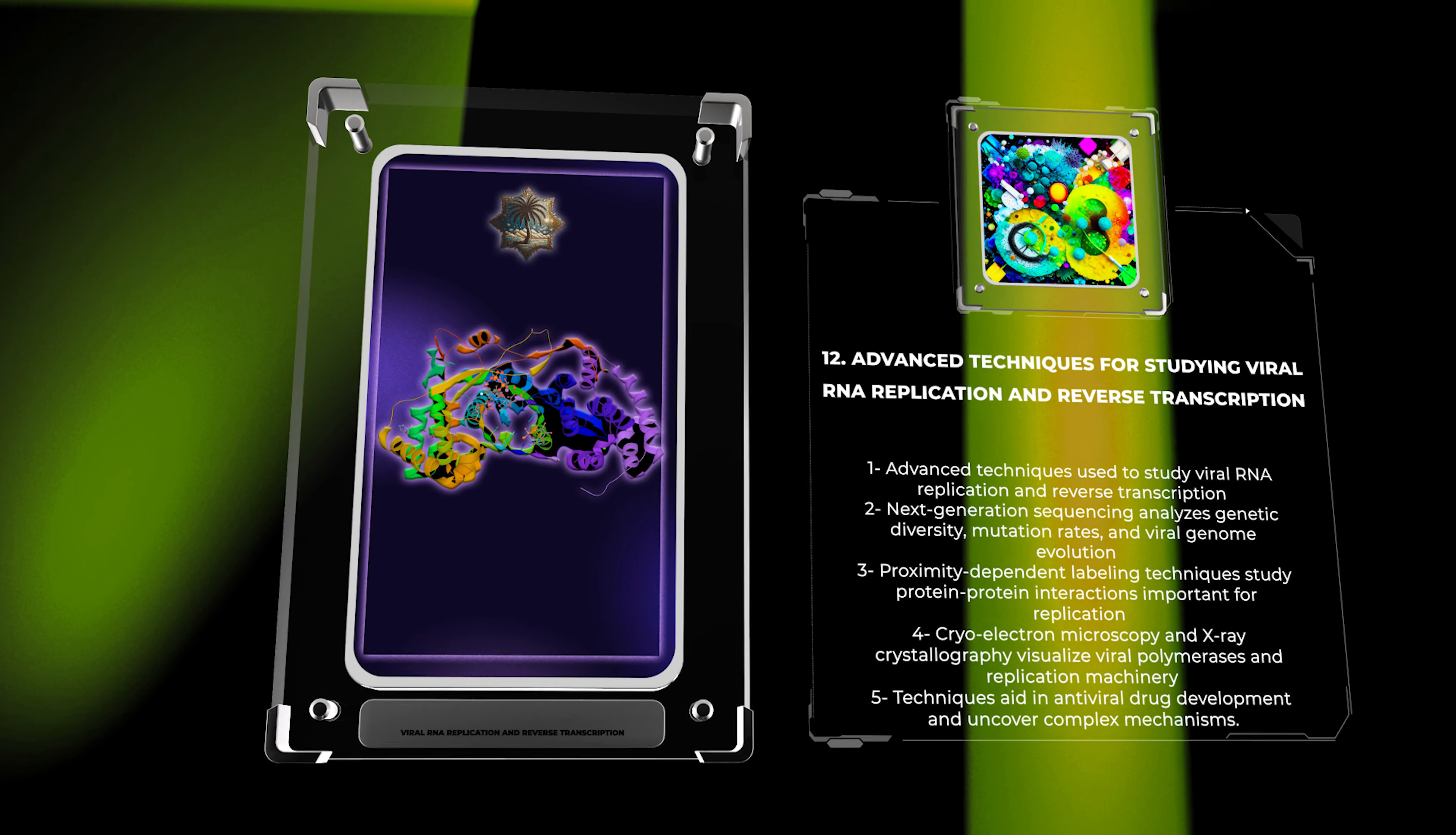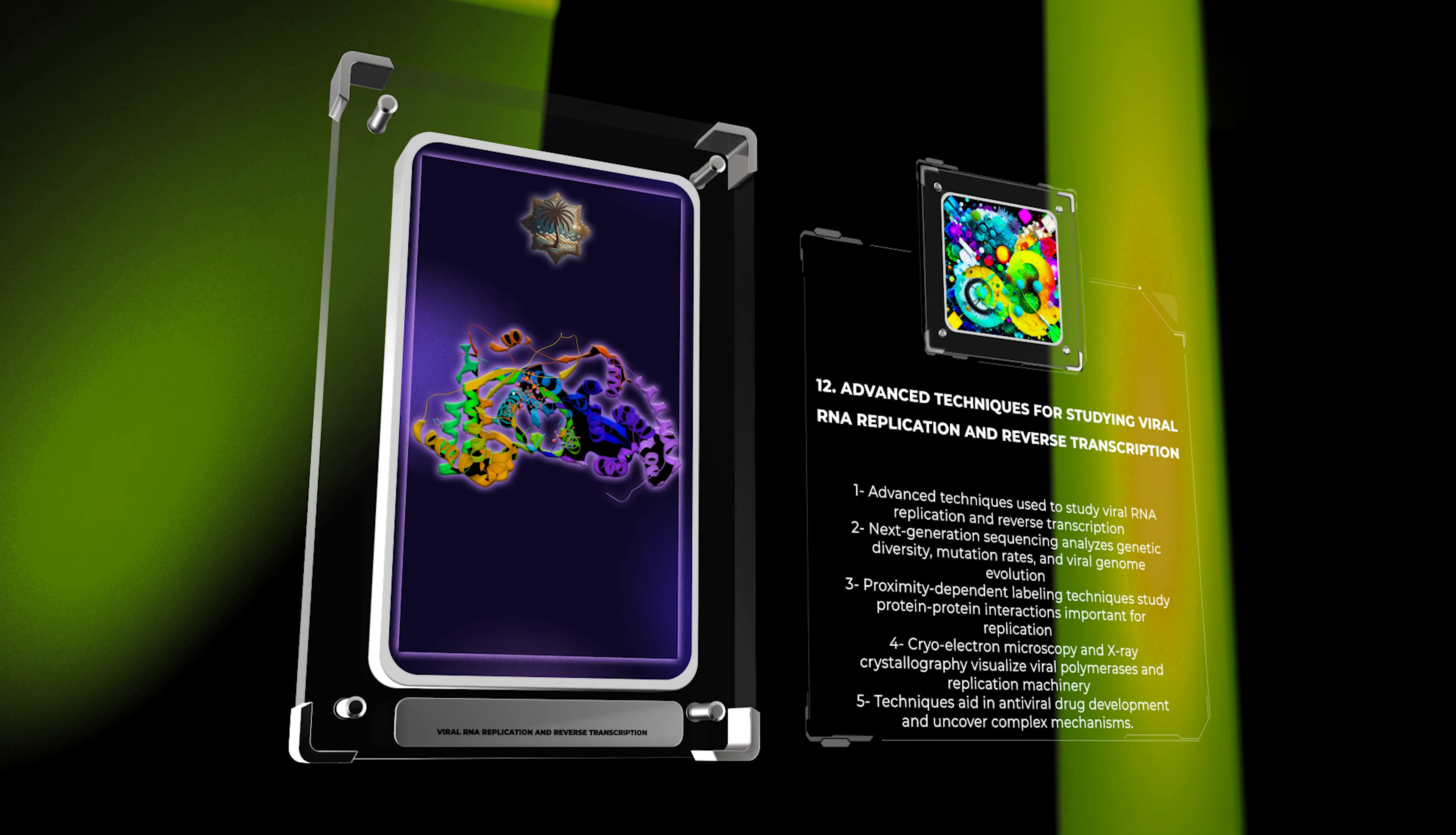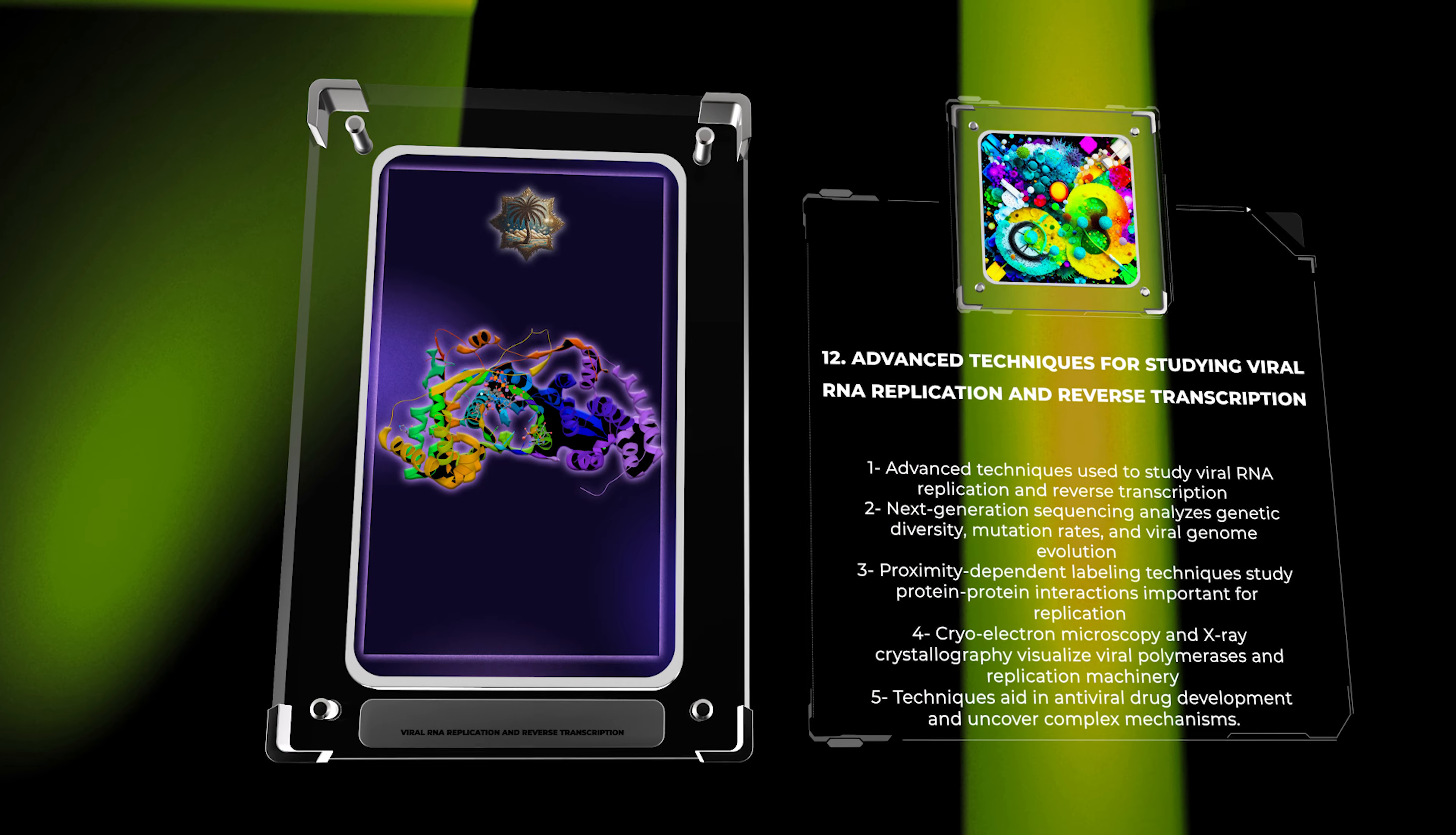Proximity-dependent labeling techniques like proximity ligation assays help us study protein-protein interactions important for viral replication. Cryo-electron microscopy and X-ray crystallography enable visualization of viral polymerases and replication machinery, aiding in antiviral drug development. These techniques uncover the complex mechanisms of viral RNA replication and reverse transcription.